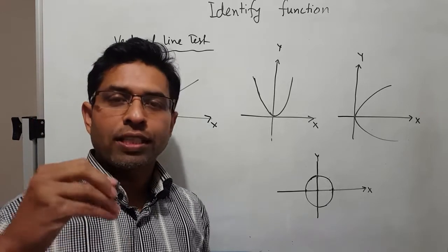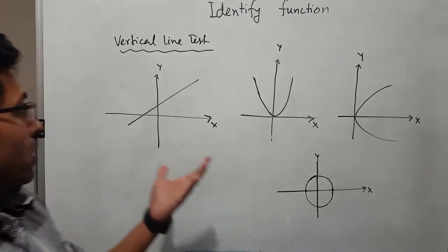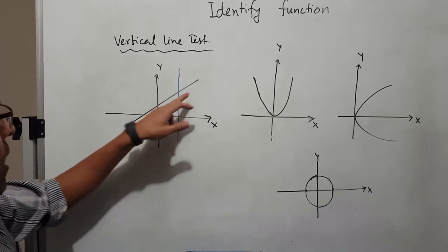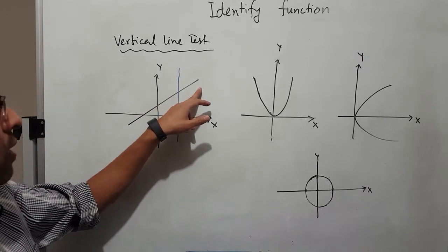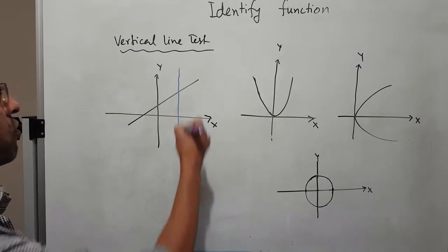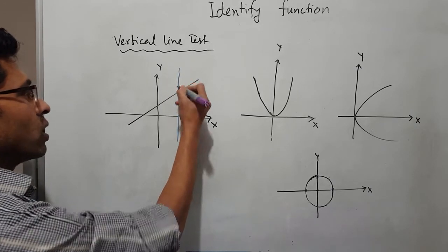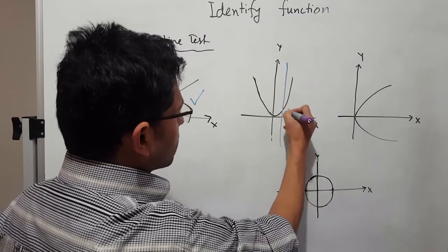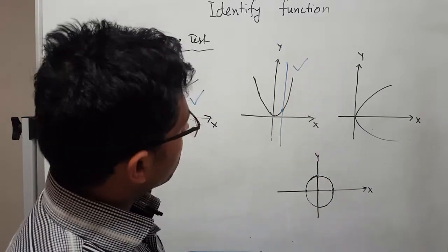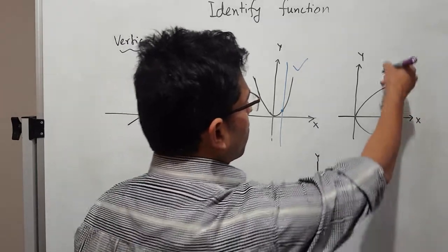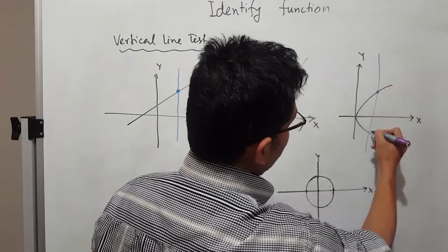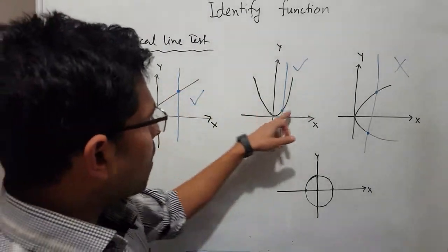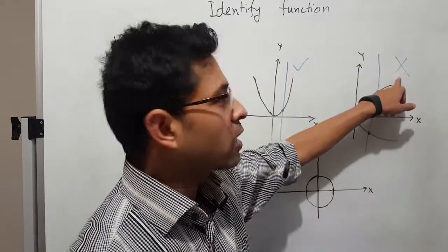If the vertical line touches or intersects more than one point, it is not a function. For example, if you make a vertical line on a straight line graph, it intersects only one point — so it is a function. But if you draw a vertical line on a sideways parabola and it intersects two points, it is not a function. An upright parabola intersected at one point is a function.